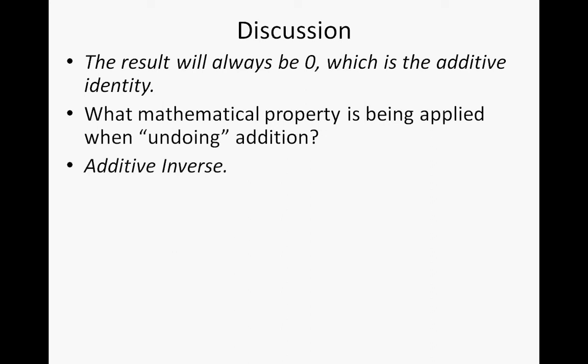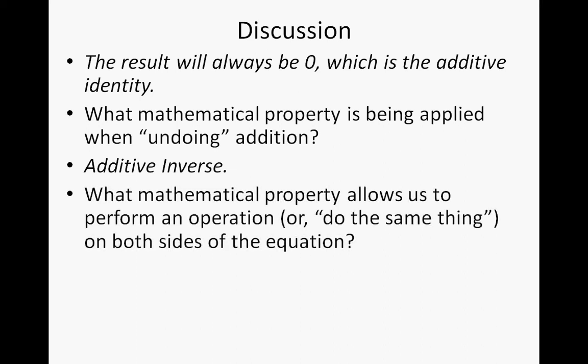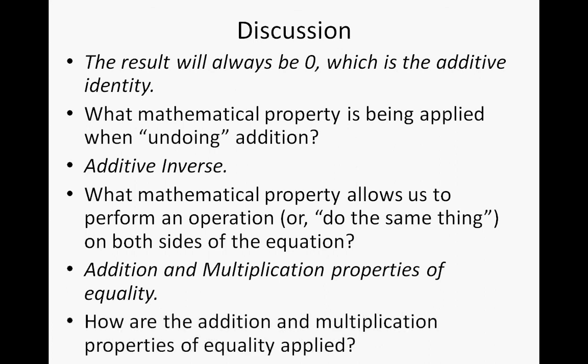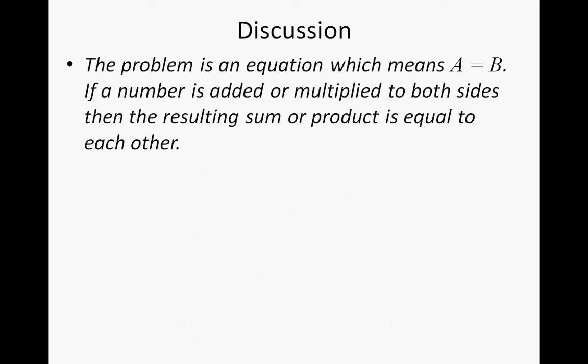The mathematical property that allows us to perform the same operation on both sides of an equation is the addition and multiplication properties of equality. The key word is equation — another word with the same meaning is equality. The problem is an equation, meaning a equals b. If a number is added or multiplied to both sides, the resulting sum or product remains equal to each other. So if 1 plus 4 equals 2 plus 3, adding or multiplying both sides by the same number yields equal values.